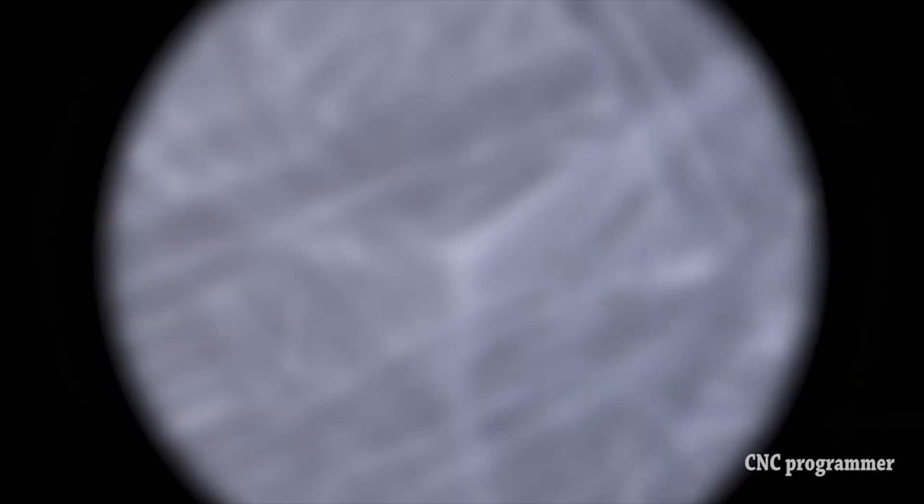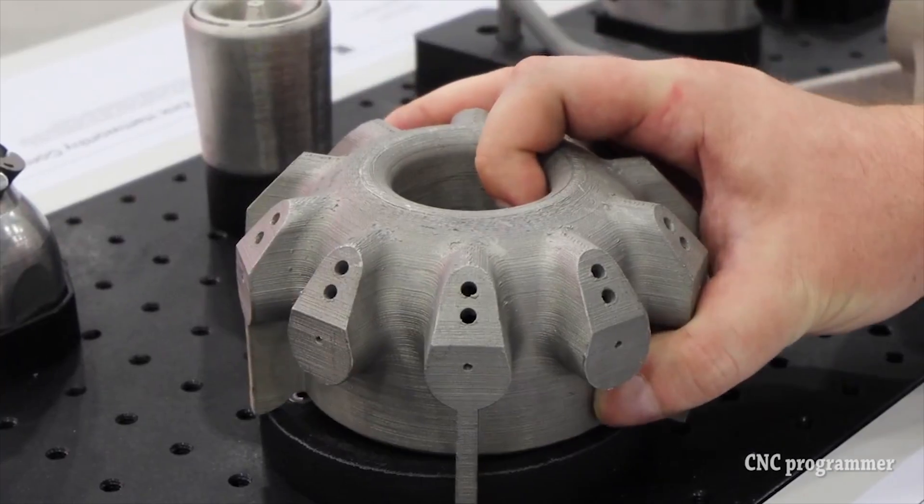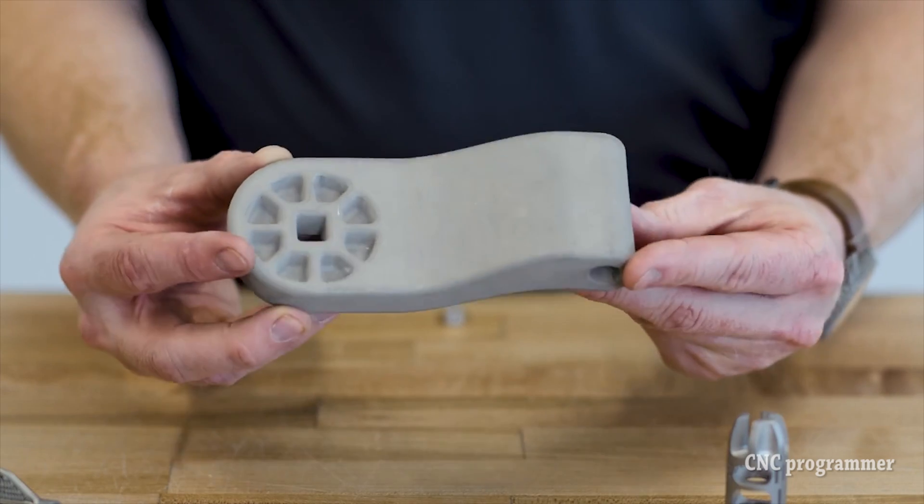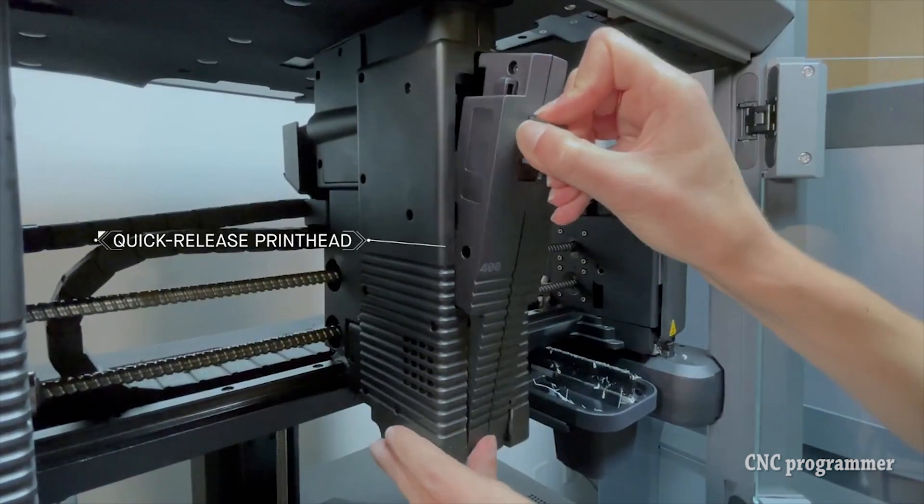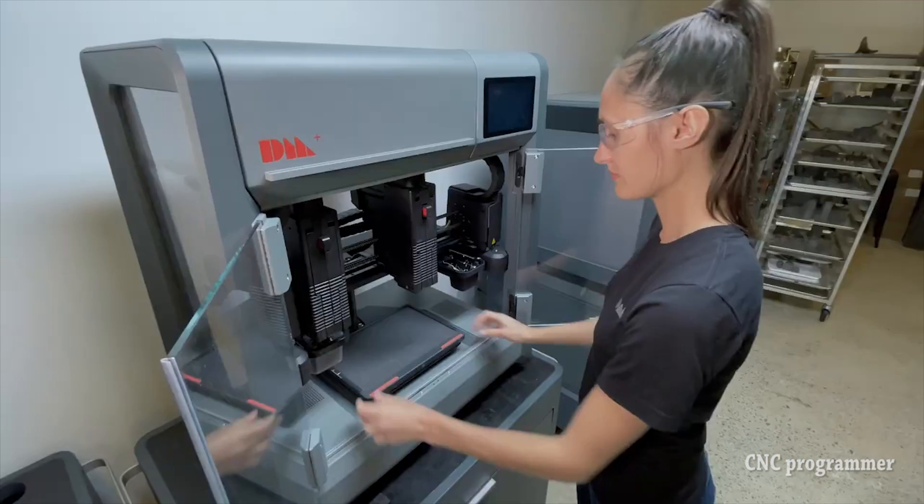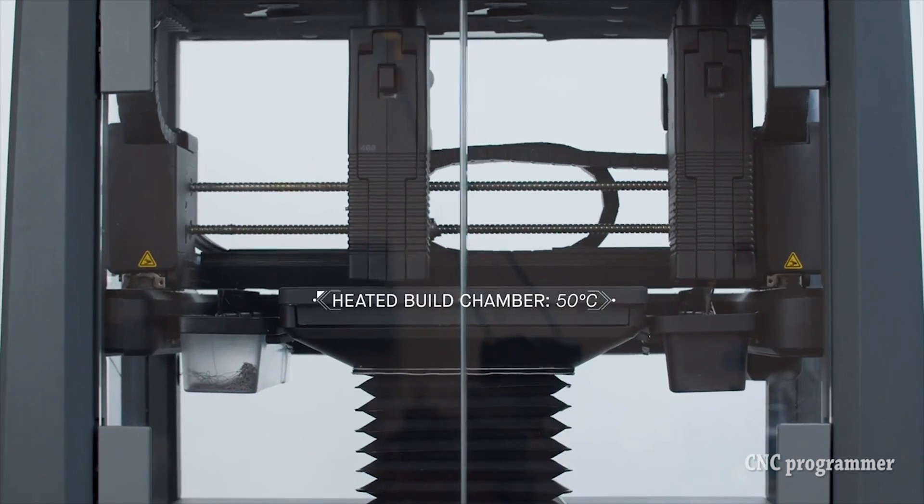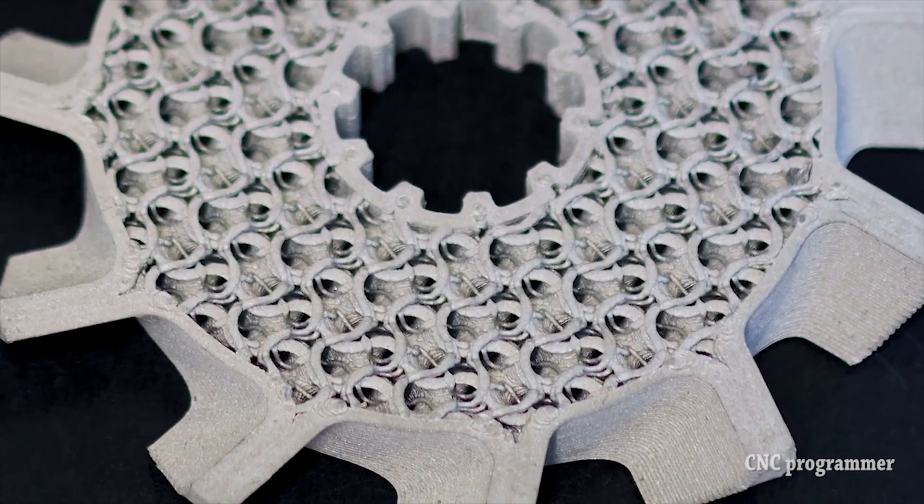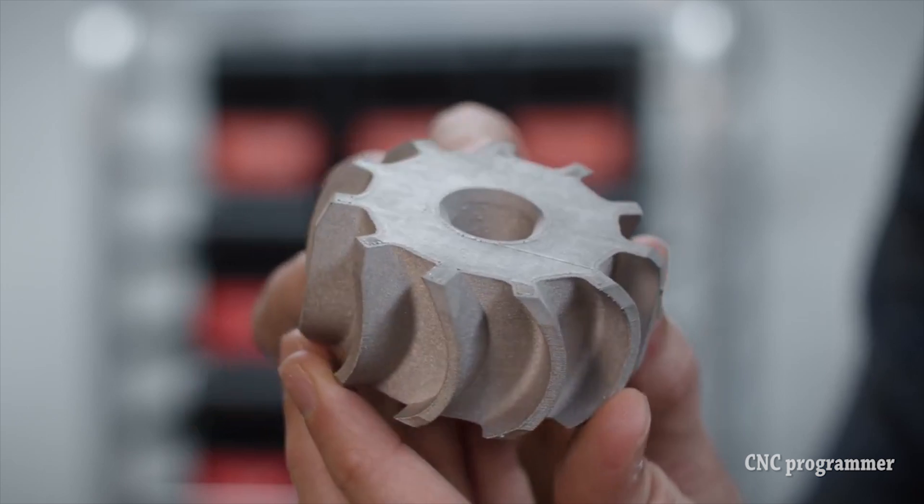Breaking Barriers with Metal: While FDM excelled with plastics, the dream of metal printing remained elusive due to the unique challenges posed by metal materials. Unlike plastics, metals require extremely high temperatures to melt, making them incompatible with traditional FDM setups. However, advancements in materials science and engineering have shattered these barriers. Today, FDM Metal 3D printers employ innovative techniques to handle metal powders and achieve the high temperatures necessary for metal fusion.